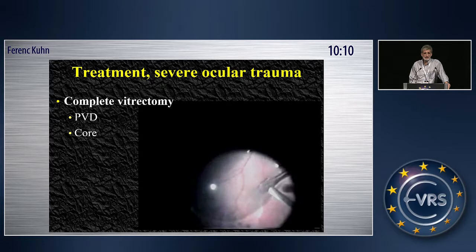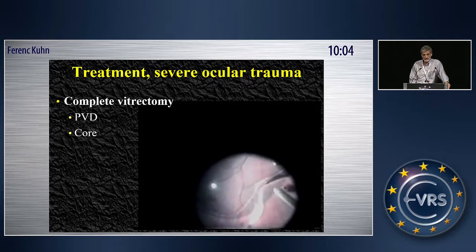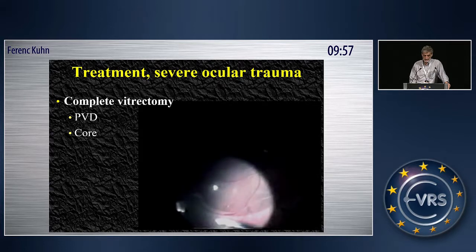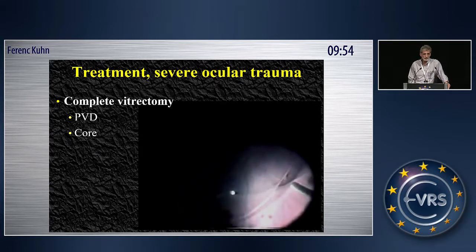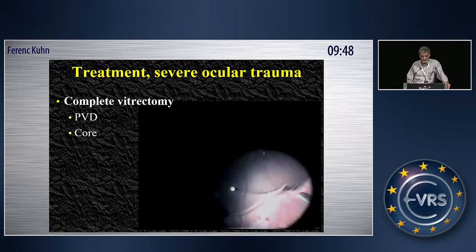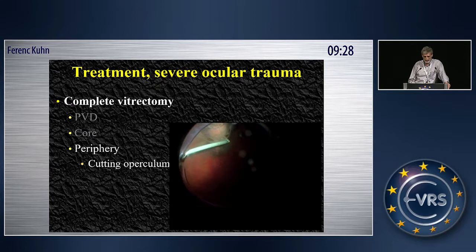One thing which is crucial is to do a complete vitrectomy, and that includes PVD. Usually it's an easy or fairly easy procedure. This short video shows one of my cases where PVD proved to be impossible. No matter what I did — putting heavy liquid on the retina — instead of stabilizing the retina, the vitreous actually cut into the bubble and detached the retina under the heavy liquid because it was so adherent. So it's not always possible.